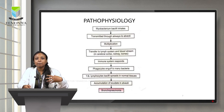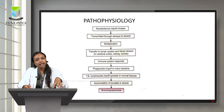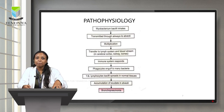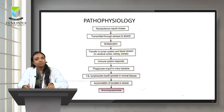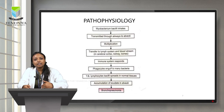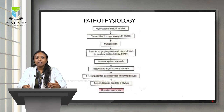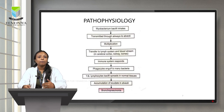Pathophysiology means the pathway of the disease or how the condition originates. The bacteria is transmitted through air droplets — Mycobacterium is inhaled and transmitted through the airways to the alveoli, where multiplication begins. It then transfers to the lymph system and bloodstream. The immune system responds and phagocytes engulf the bacteria. TB lymphocytes spread in normal tissues, leading to accumulation of exudate in the alveoli and bronchopneumonia.